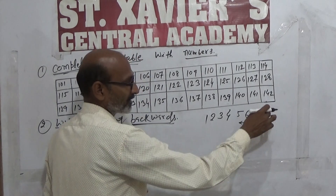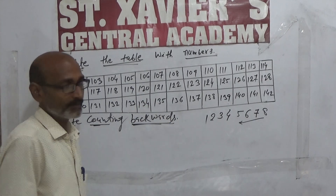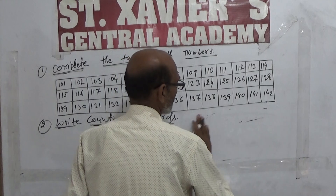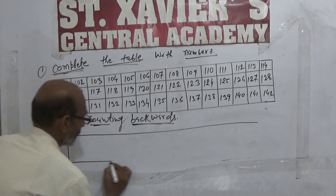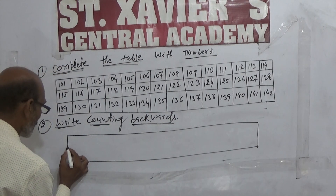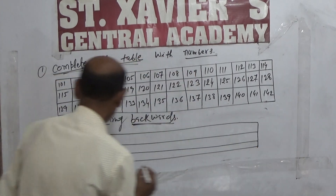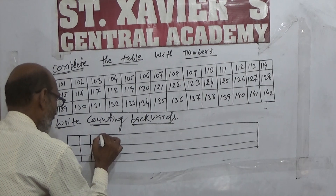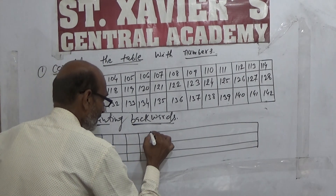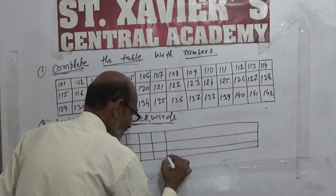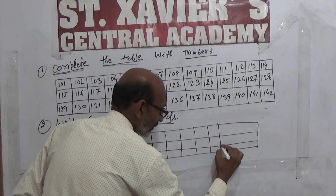Backward यानि पीछे की तरफ — number कम होते जाएंगे। जैसे पहले के question में ascending में था, आगे की तरफ बढ़ रहा था, लेकिन यहाँ backward है — यानि पीछे की तरफ जाएगा, and the number will be small।